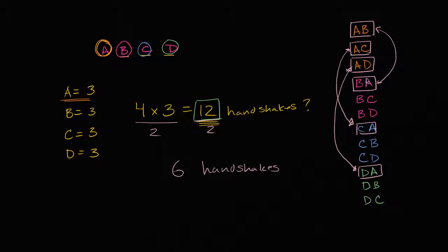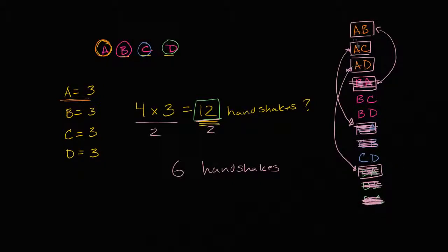If we want to see the six handshakes, let's get rid of all the double counting. AB is the same as the duplicate, so we remove it. AC is the same as its duplicate. AD is the same as its duplicate. BC, BD, and CD — each has a duplicate we remove. We're left with one, two, three, four, five, six total handshakes.